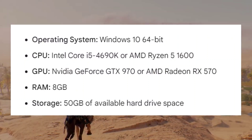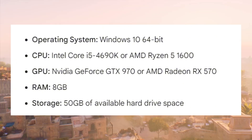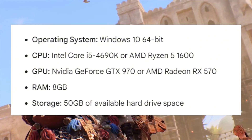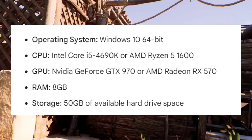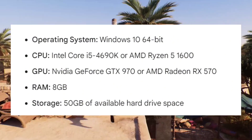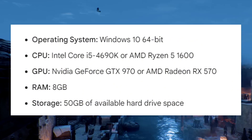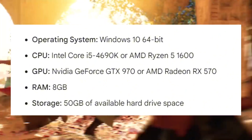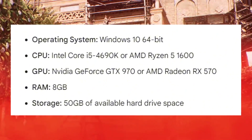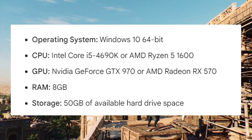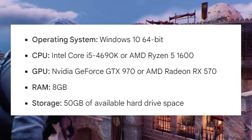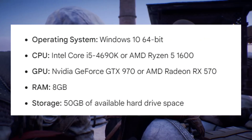First, you should know the system requirements. The operating system should be Windows 10 64-bit, CPU Intel Core i5-4690K or AMD Ryzen 5 1600. GPU should be Nvidia GeForce GTX 970 or AMD Radeon RX 570. RAM is 8 gigabytes and storage is 50 gigabytes of available hard drive space. If your PC doesn't meet these requirements, you're likely to experience performance problems and may need to upgrade your hardware.